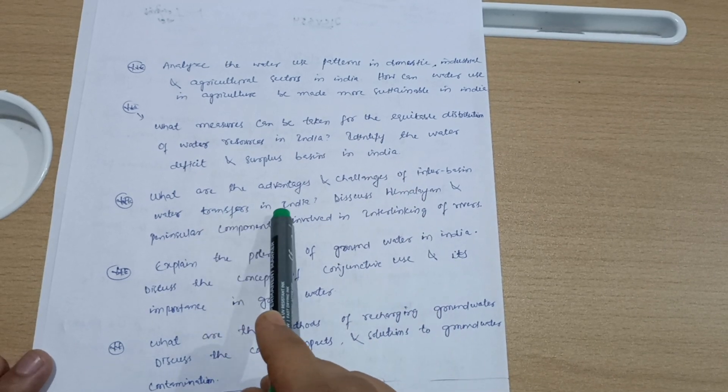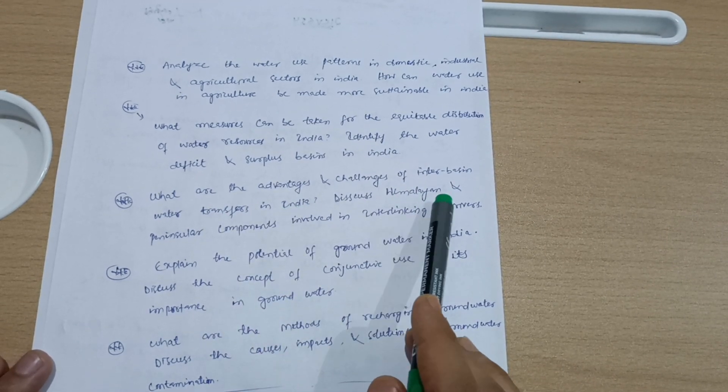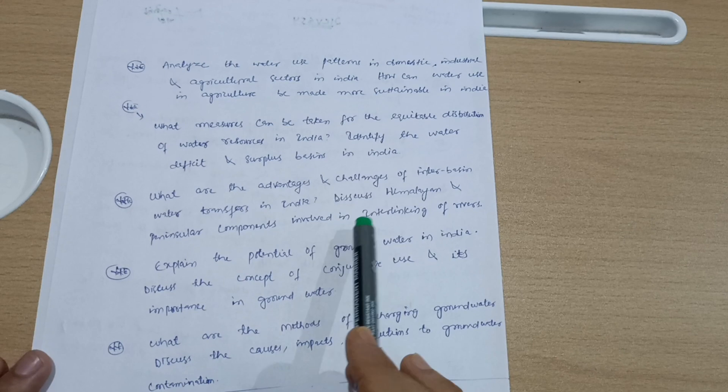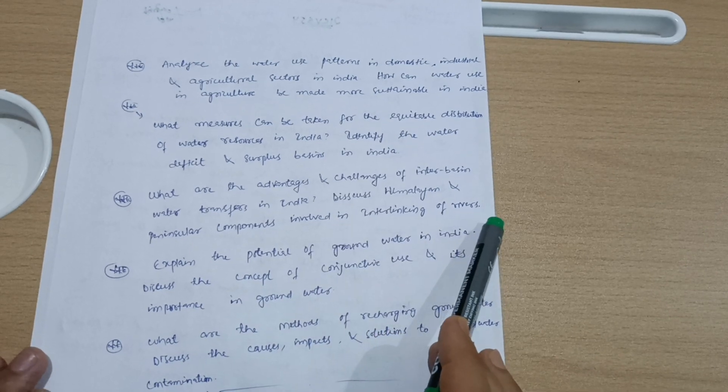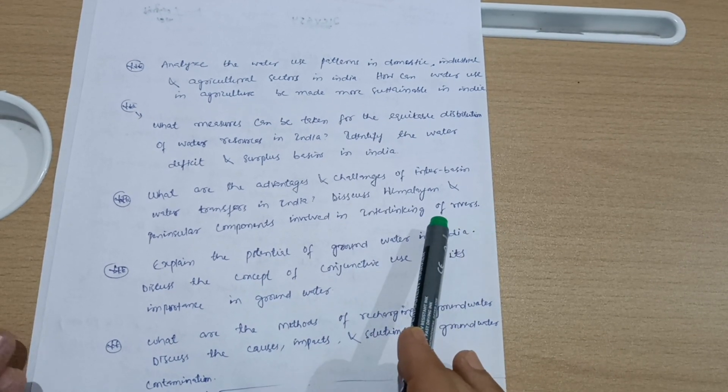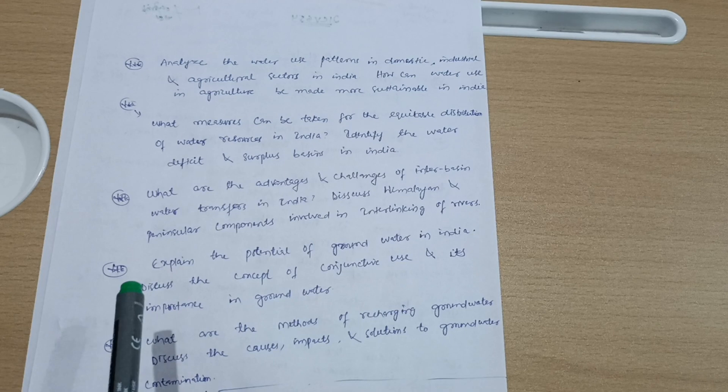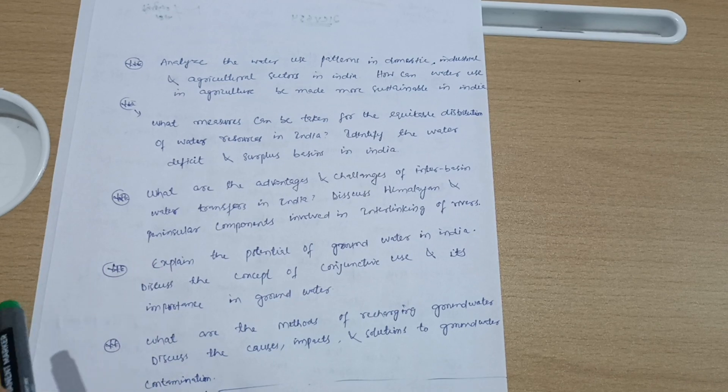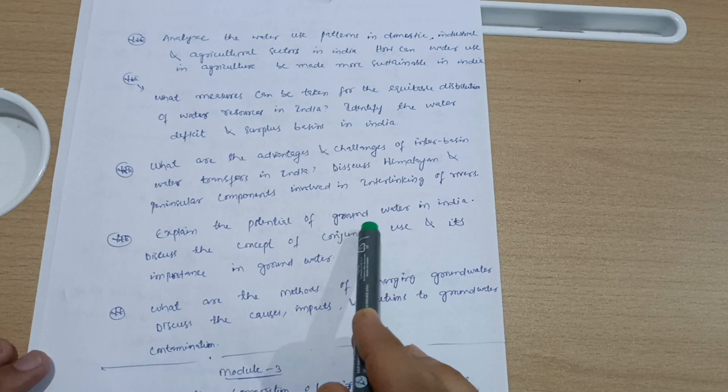Next: What are the advantages and challenges of inter-basin water transfers in India? Discuss Himalayan and peninsular components involved in interlinking of rivers. This may be a seven marks question, or sometimes they give ten marks questions, but most probably six, seven, or eight marks.